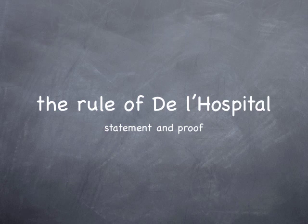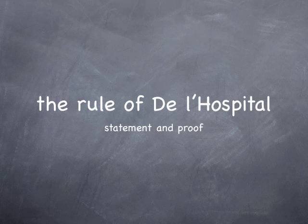In Calculus 1 you have seen how to calculate various kinds of limits, and in particular undetermined kinds of limits. But this only worked in particular cases, and now we want to see a more systematic way to deal with this kind of limits.